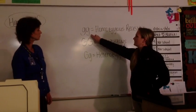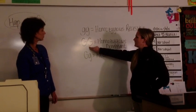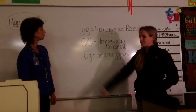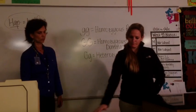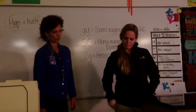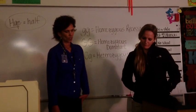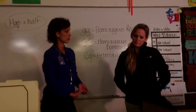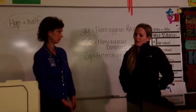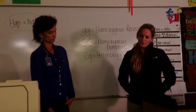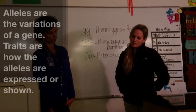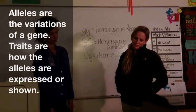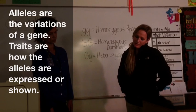For example, we could use little g's, big G's, or a big G and a little g. So how is an allele different from a trait? Alleles are the variations of a gene. Traits are how the alleles are expressed or shown.